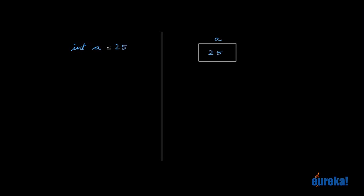First, let's look at what happens when we have an integer. Let's say I declare int a — somewhere in memory we allocate four bytes, call it a. And if it's int a equals 25, it puts the number 25 there. Now if I say int b equal to a, it allocates space for b and copies the number 25 there. Now I can do anything I want with b — I can say b plus plus, which makes it 26. The original a still remains 25 because a is not changing.